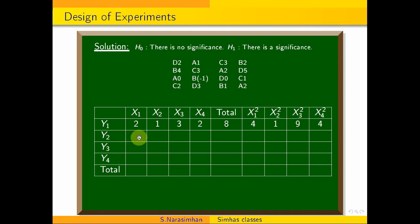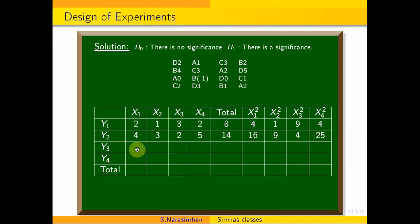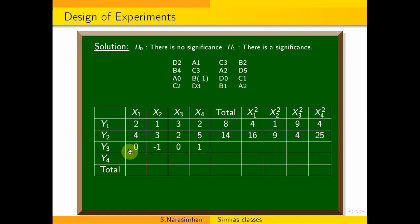The second row is 4, 3, 2, 5, giving totals of 7, 10, 14. The squares are: 4 squared is 16, 3 squared is 9, 2 squared is 4, 5 squared is 25. The third row is 0, minus 1, 0, 1, which adds to 0. The squares are: 0 squared is 0, minus 1 squared is 1, 0 squared is 0, 1 squared is 1.